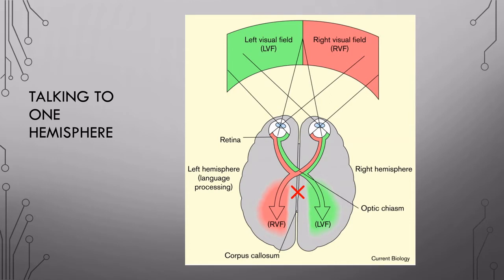Even though it seemed like the patients were perfectly fine, a prominent researcher, Michael Gazzaniga, had found a way to isolate and communicate to each hemisphere directly. To understand how this is done, let's go over some anatomy really quickly.